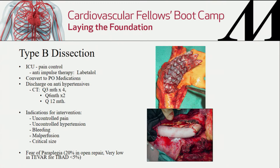Indications for intervention for type B dissection include uncontrolled pain, hypertension, bleeding, malperfusion, an increase in size, or if they start out very big. There's data suggesting that starting out with a total aortic diameter greater than 41-42 mm (true plus false) or a false lumen greater than 21-22 mm predisposes to aneurysmal degeneration of the proximal aorta — and maybe you should do something about that beforehand.